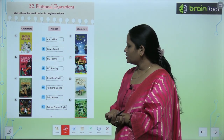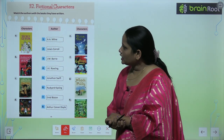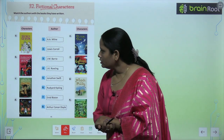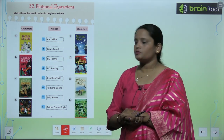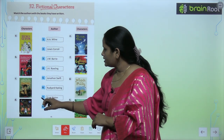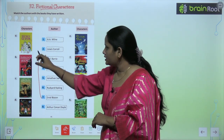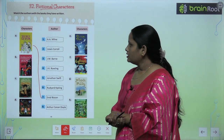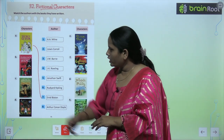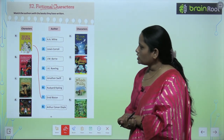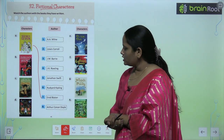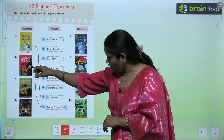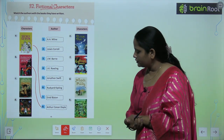The first one is Secret 7. This is a book and the author of this book is Enid Blyton. The second book is Sherlock Holmes and this book is written by Arthur Conan Doyle.